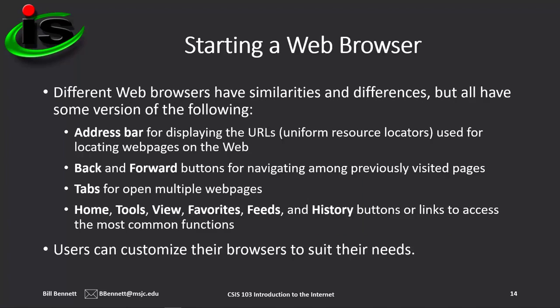There are many different web browsers you can use on your computer. They have similarities and differences, but they all have some version of the following: an address bar for displaying URLs — uniform resource locators — used for locating web pages on the web; back and forward buttons for navigating among previously visited pages; tabs for opening multiple web pages; and home, tools, view, favorites, feeds, and history buttons or links to access the most common functions.